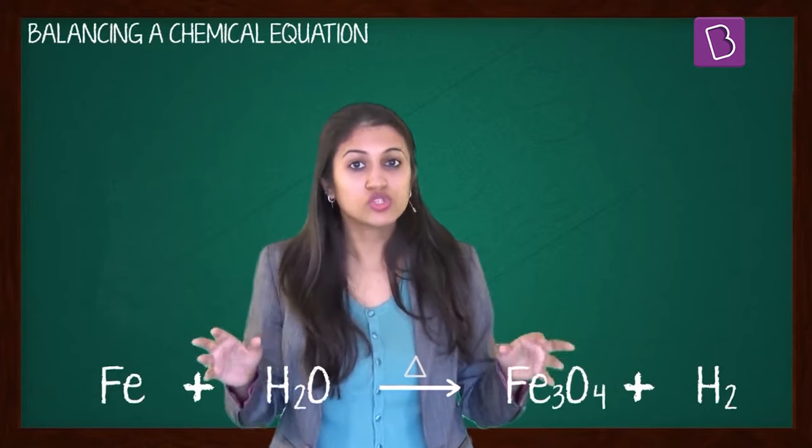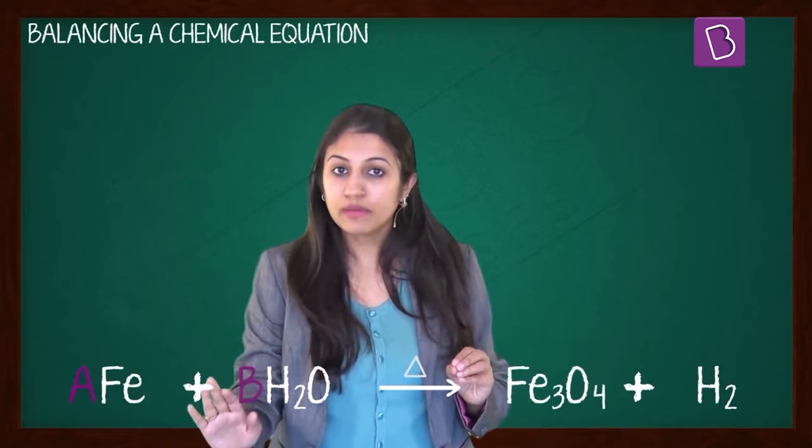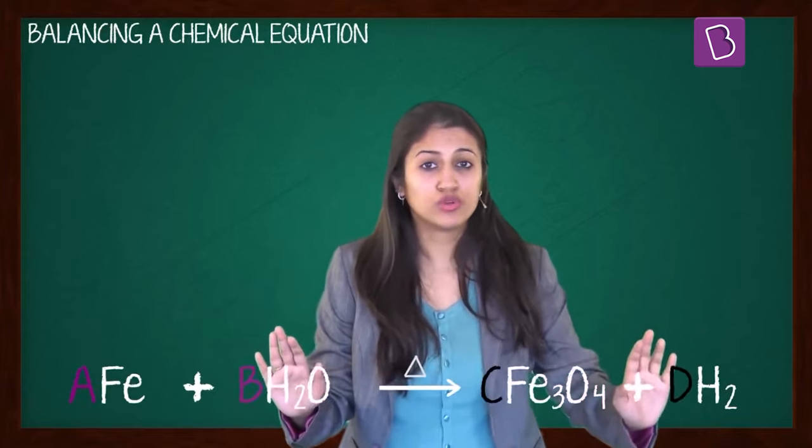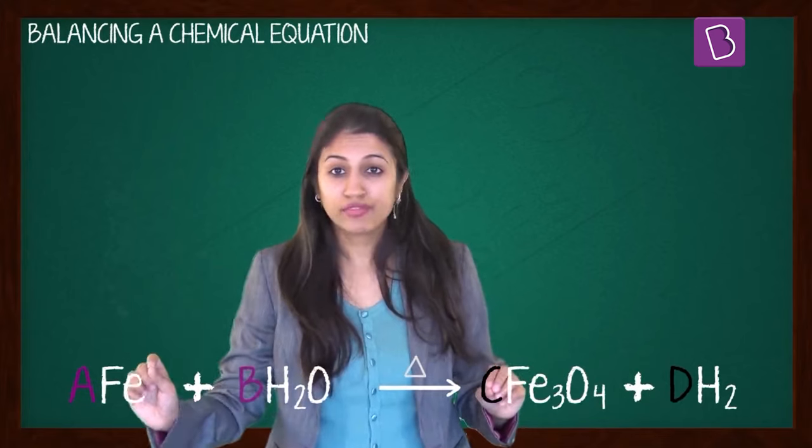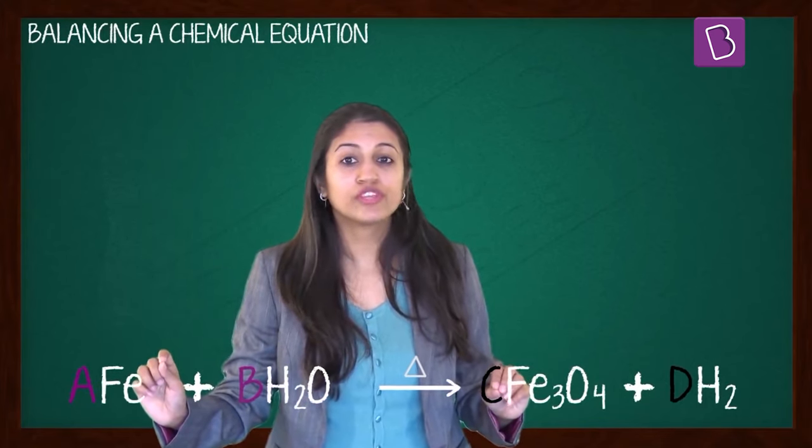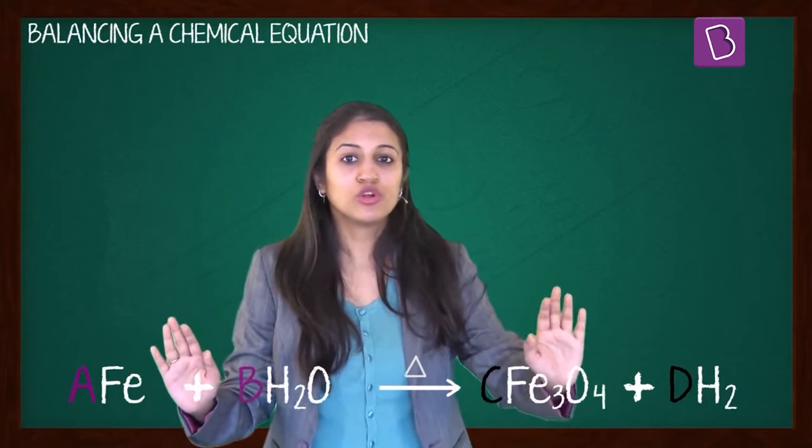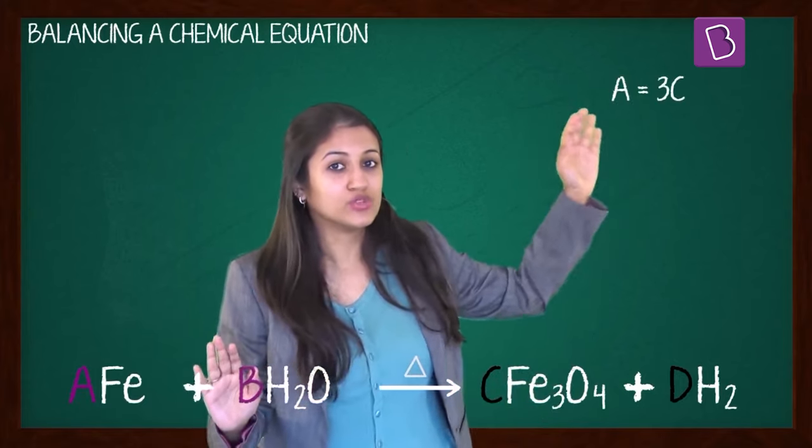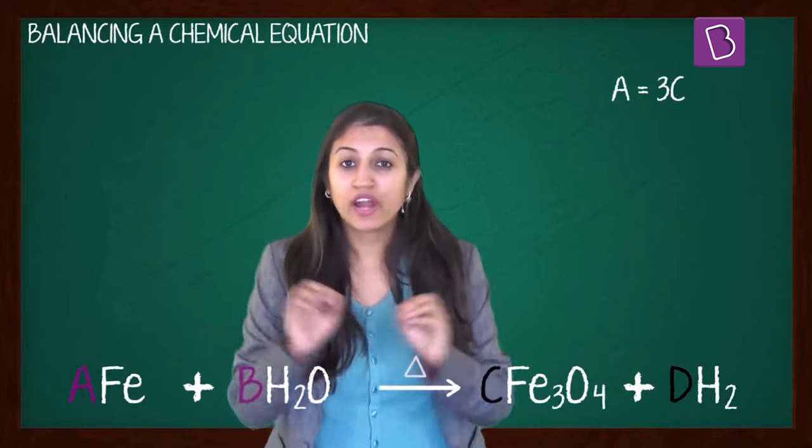Now you don't know. So assume that there are A molecules of Fe, B molecules of water, C molecules of Fe3O4 and D molecules of H2. So I'll consider Fe. I have A molecules of Fe on the reactant side and 3C molecules of Fe in the product side. If I want to show this in an equation, it will be A is equal to 3C.